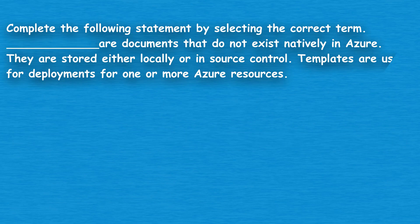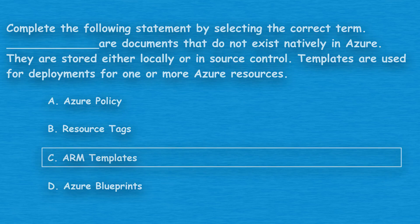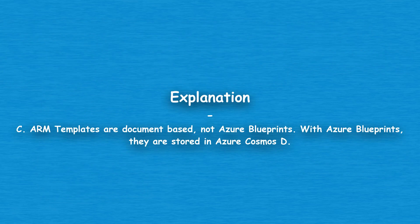The next question: complete the following statement by selecting the correct term. Blank are documents that do not exist natively in Azure. They are stored either locally or in source control. Templates are used for deployments for one or more Azure resources. Option A: Azure Policy. The correct answer is Option C, ARM Templates. ARM templates are document-based, not Azure Blueprints.